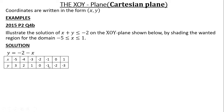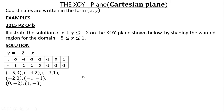So from here, what you are supposed to do is put them in the form X, Y. Our coordinates will be: (-5, 3), (-4, 2), (-3, 1), (-2, 0), (-1, -1), (0, -2), and (1, -3). So our coordinates will look like that.